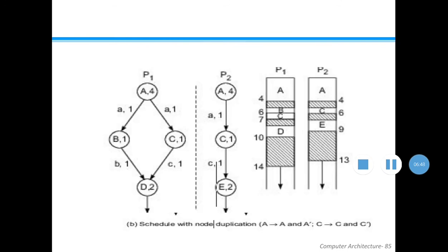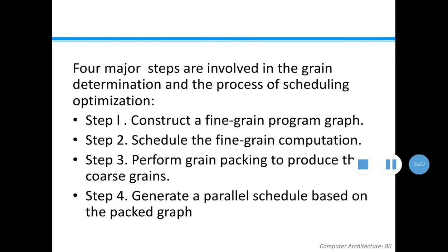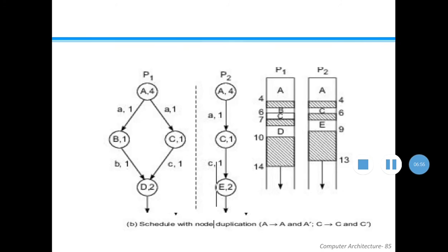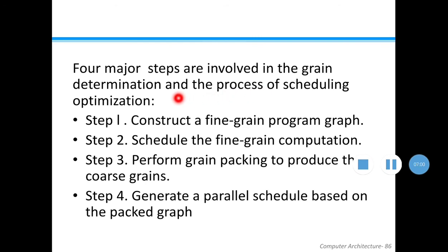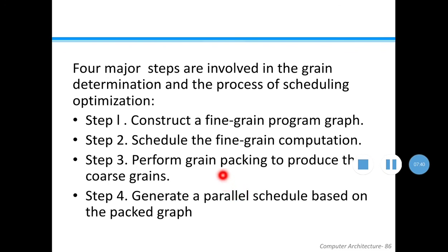Using node duplication we can reduce execution time. There are four major steps involved in grain determination and scheduling optimization: step one is to construct a fine-grain program graph; step two is to schedule the fine-grain computation; step three is to perform grain packing to produce the coarse grains; and step four is to generate a parallel schedule based on the packed graph. These four steps were followed in the previous example.